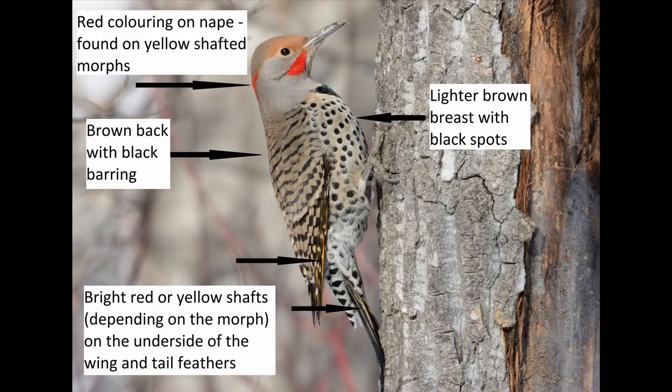Yellow-shafted flickers also have a red crescent on the back of their neck, the nape, while red-shafted flickers usually don't. But adult males do have red colouring to the side of their beak — their whiskers.